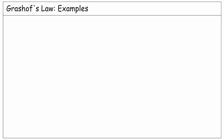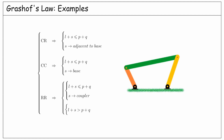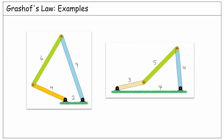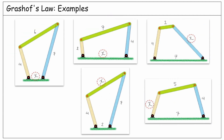In this lecture, we want to practice how to apply Grashof's law for a four-bar linkage. You will see two types of examples. In some of them, the lengths of all the links are given and we need to predict the type of motion, which is straightforward and easy. Whereas in some others, we need to determine the range for the lengths of one of the links in order to have a desired type of motion, which might be a bit more complex.